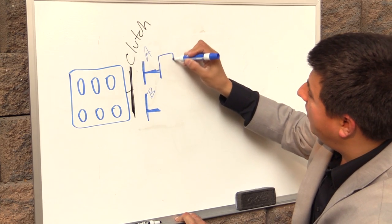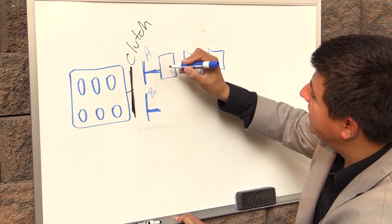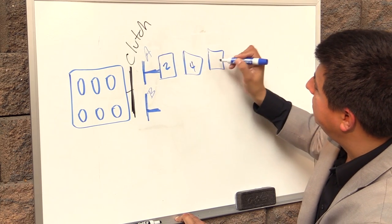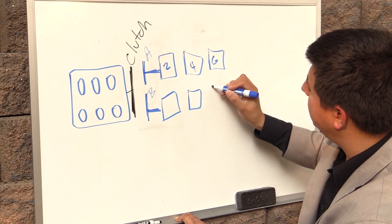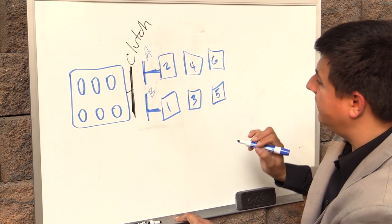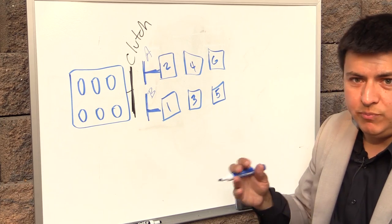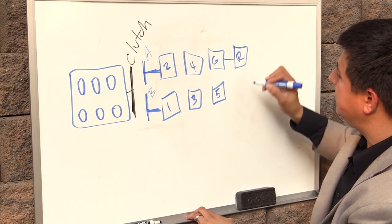Now on clutch A side we have gears 2, 4, and 6. And then over here on this side we have 1, 3, and 5. Now manufacturers will put reverse on either one of these, so we'll just go over here and we'll also add reverse to this one up top. It really depends on the original design of the transmission.